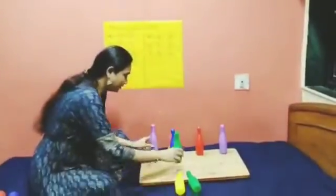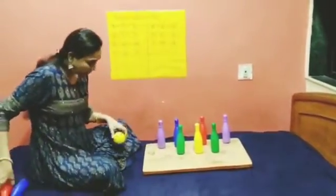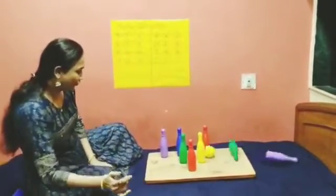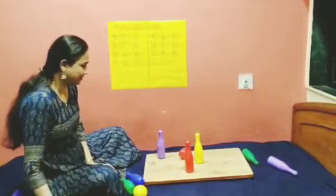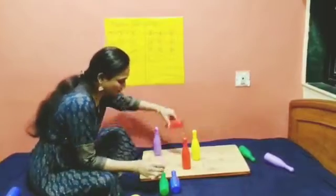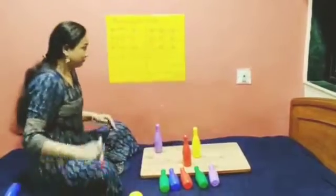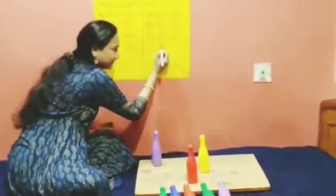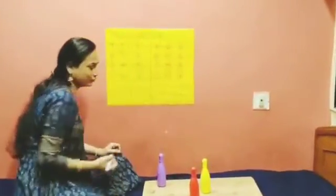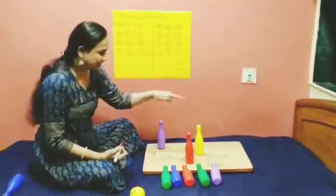Now let's set the bottles again. Teacher, turn the board. Again: 1, 2, 3, 4, 5. 5 bottles fell down — where do we write it? Here. How many bottles are left standing? Here. And how many total bottles? So 5 plus 3: 5, 6, 7, 8. Total 8 bottles.